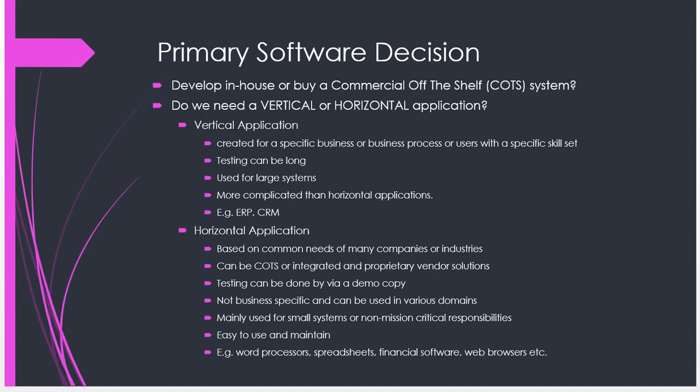A vertical application is created for a specific skill set in a business, focusing on one thing — for example, a system just for accounting or IT management. Testing and scale can be significant. Horizontal applications, by contrast, are used across industries with minimal customization; modules are already developed and you just customize them to suit your needs. These include word processors, spreadsheets, financial software, and web browsers.